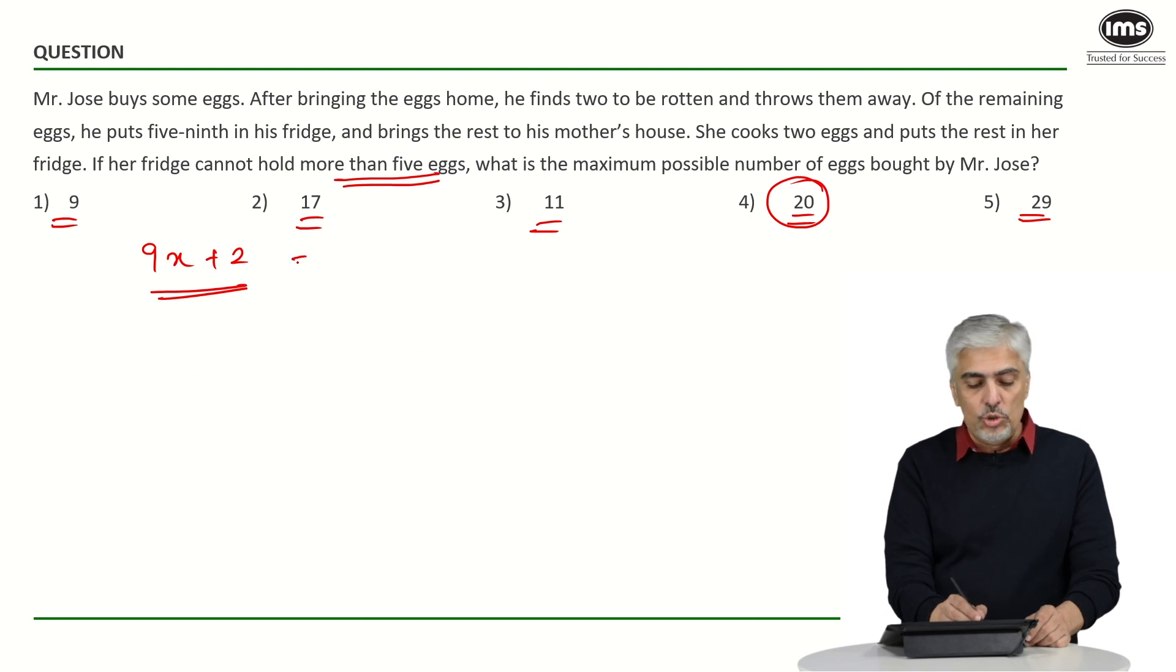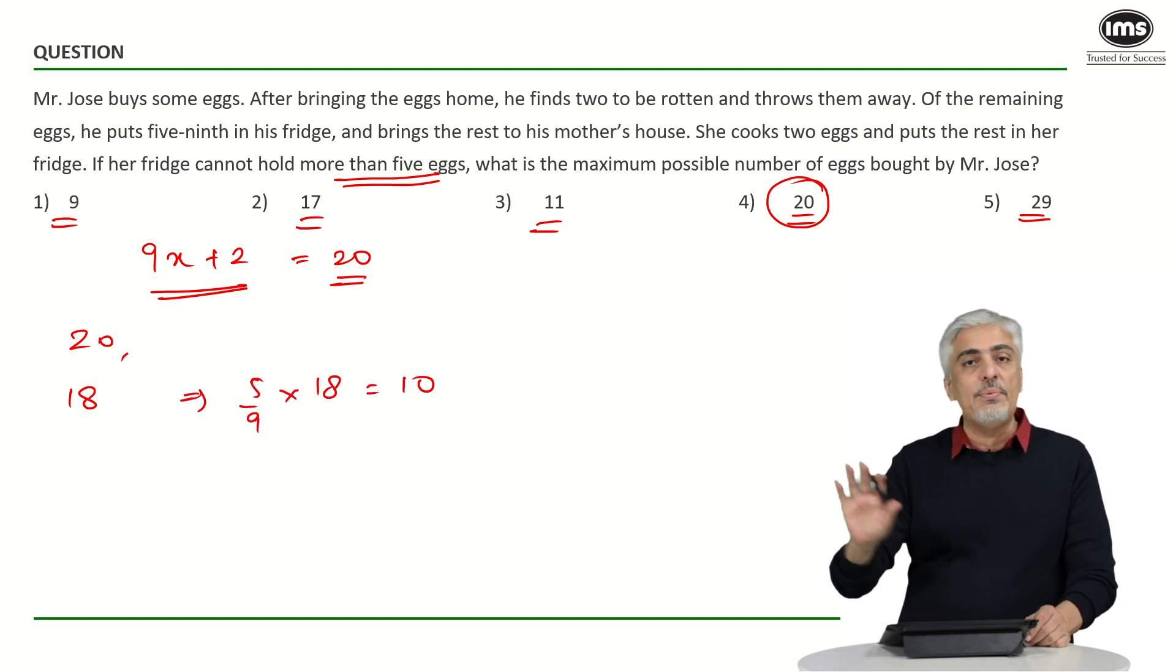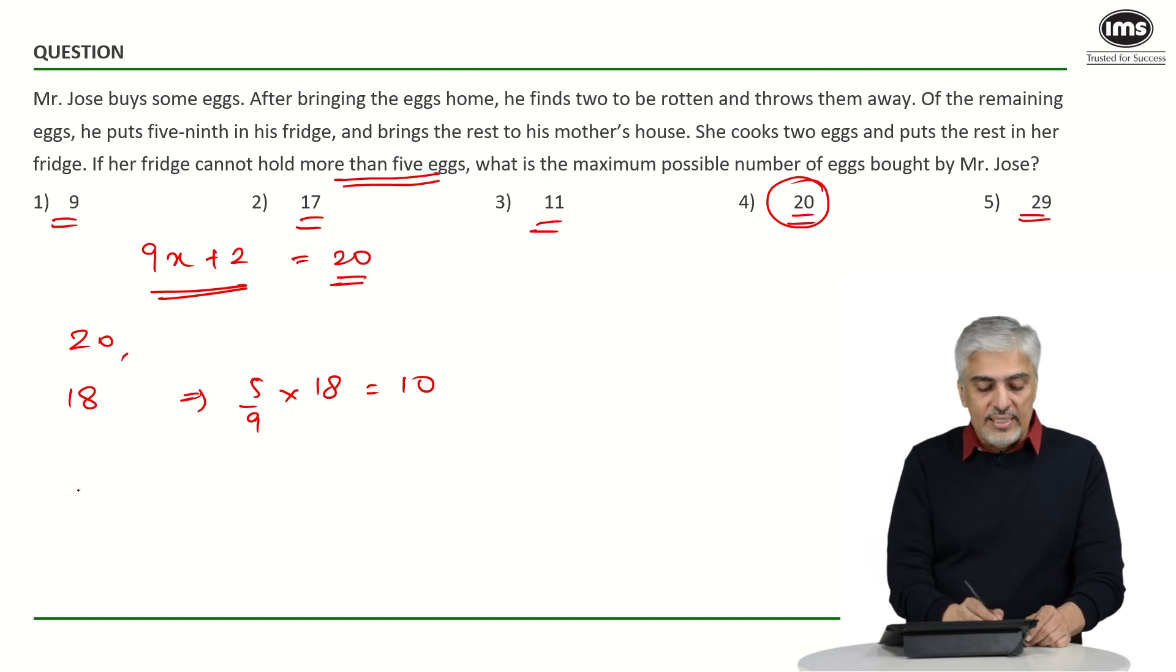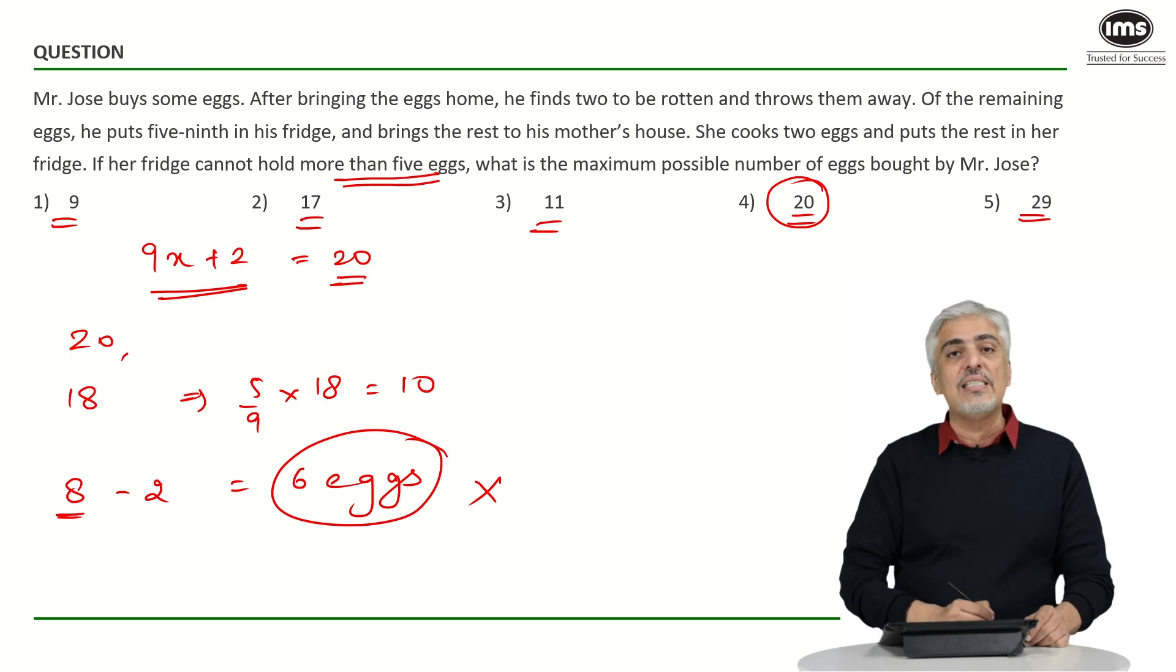If I take let 9x plus 2 be 20, that means the total number of eggs are 20. Let's do the whole calculation that way. 20 eggs were there, 2 were rotten, so 18 were remaining. How much is 5 9th of 18? 10 eggs were kept in the fridge by Jose, which means number of eggs left is 8, out of which the mother will cook 2 eggs. So 8 minus 2, 6 eggs are remaining and these eggs cannot go in the refrigerator because the maximum capacity is 5. Hence 20 cannot be the answer.